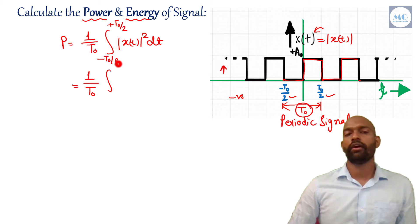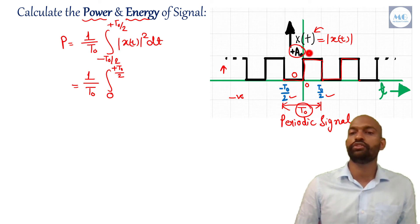What is the interval of this integration minus t0 by 2 to plus t0 by 2. And as this signal is from minus t0 by 2 to 0 is 0, this signal is 0. So we just have to integrate it from 0 to plus t0 by 2. And what is the value of mod of xt? From 0 to plus t0 by 2, its value is a0. So mod of xt value is a0, so mod of xt square, that's why a0 square dt.